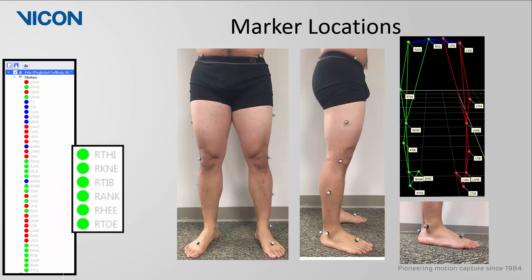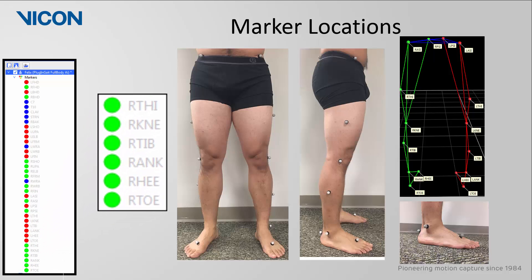Lastly, we have the right leg markers. These markers will be placed at the same anatomical landmarks as the left leg markers. However, the right thigh and right tibia markers will be placed slightly proximal to the midpoint between their segments as opposed to slightly distal as it was done on the left side. Again, this helps introduce some asymmetry into the model so that the labeler has a better chance to distinguish between left and right.